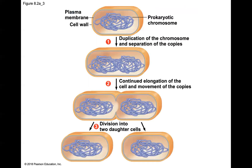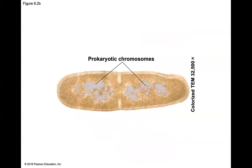Let's look at this diagram of what's happening during binary fission. We have this prokaryotic cell — think of it like a bacterium — with a single chromosome that must be duplicated. Once that chromosome is duplicated, there is a separation of the two new chromosomes. There's an elongation you'll observe in the cell, chromosomes move towards opposite ends, and we eventually have a division of the cytoplasm into two daughter cells. This micrograph shows two prokaryotic cells being created through binary fission.